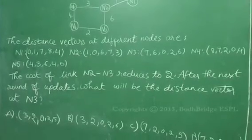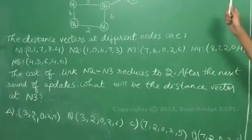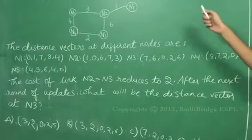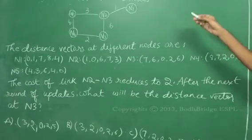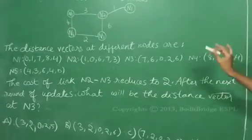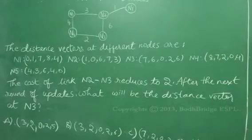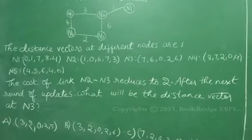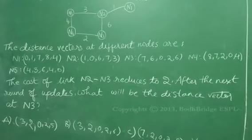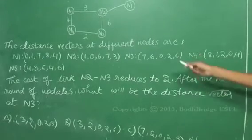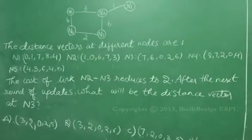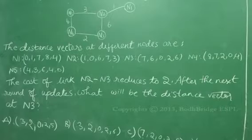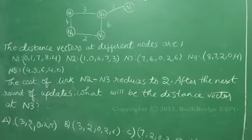Distance vectors represent the best known distances between different nodes, and the distance from a node to itself is 0. The question is: the cost of the link between N2 and N3 reduces to 2 from 6. After the next round of updates, what will be the distance vector at N3?